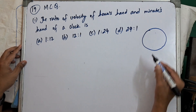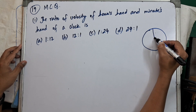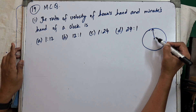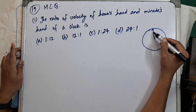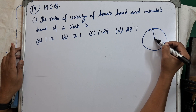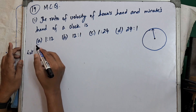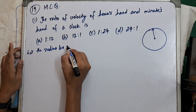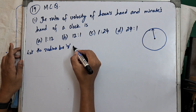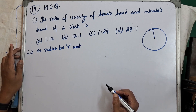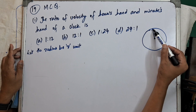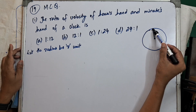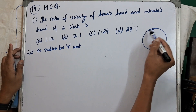Here we have a circular face of the clock. Let's assume the hour hand, minute hand, and the radius of this circular face are all equal to each other. Let the radius of this circular face be R units — it can be meters, centimeters, or kilometers.